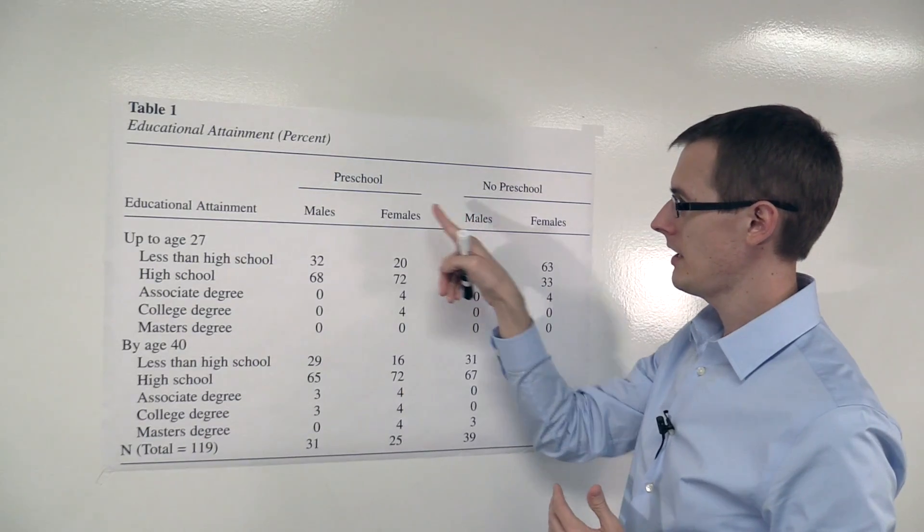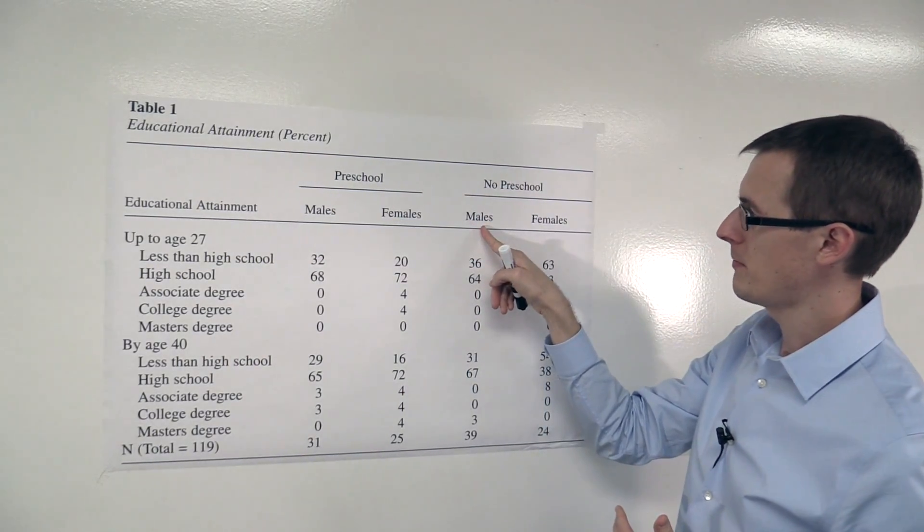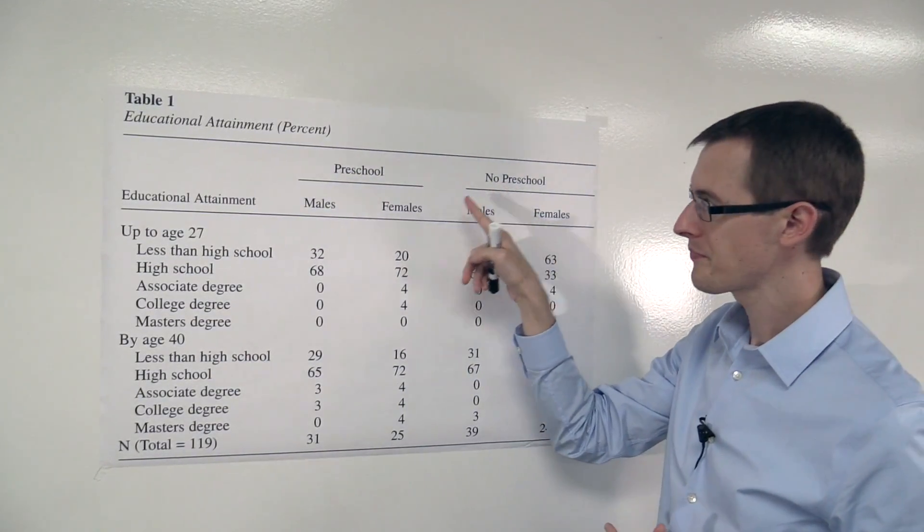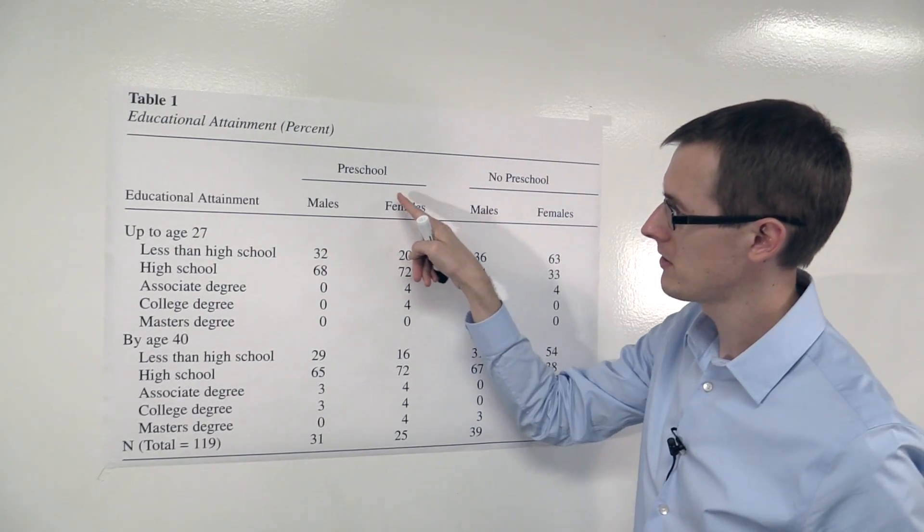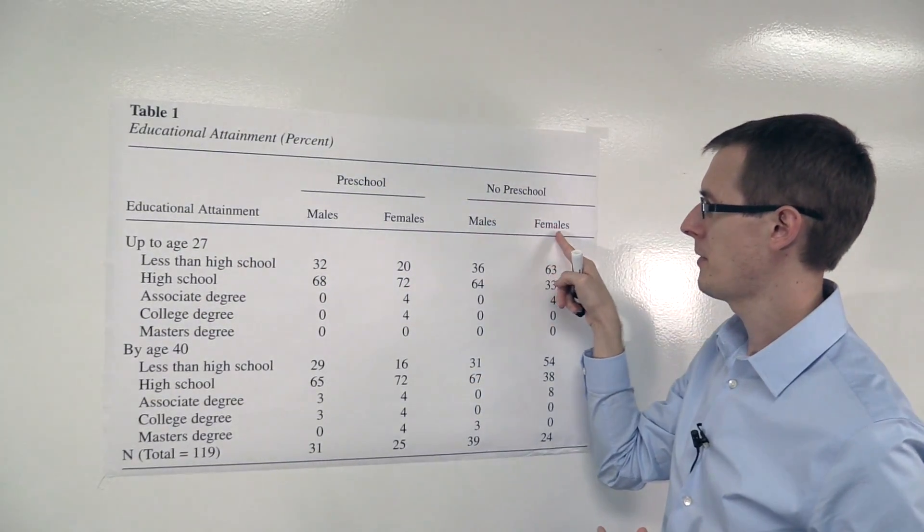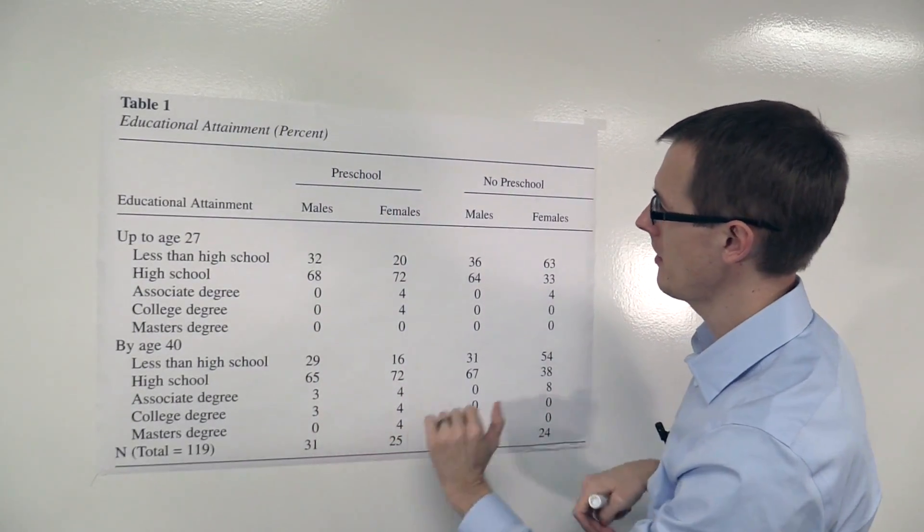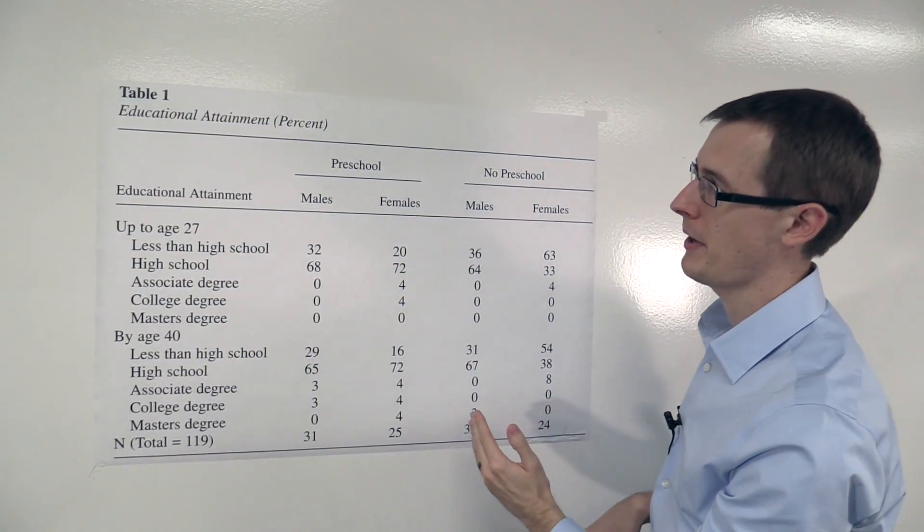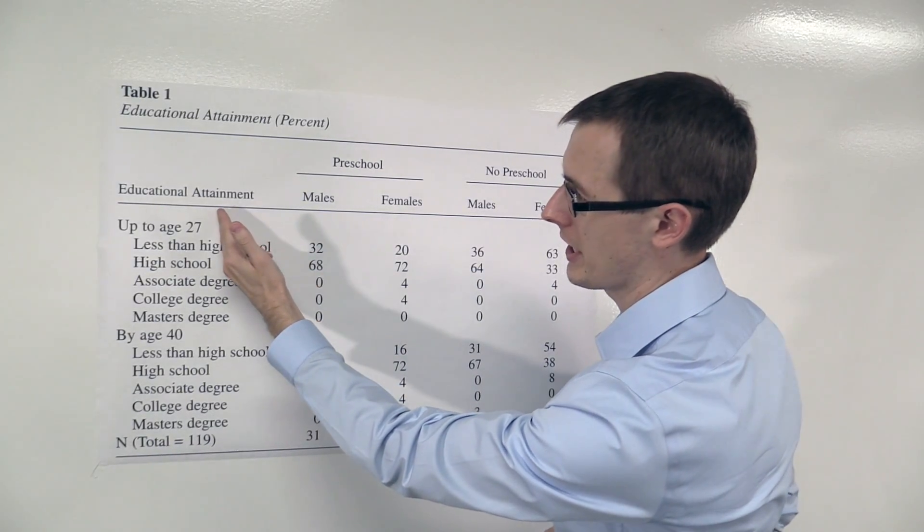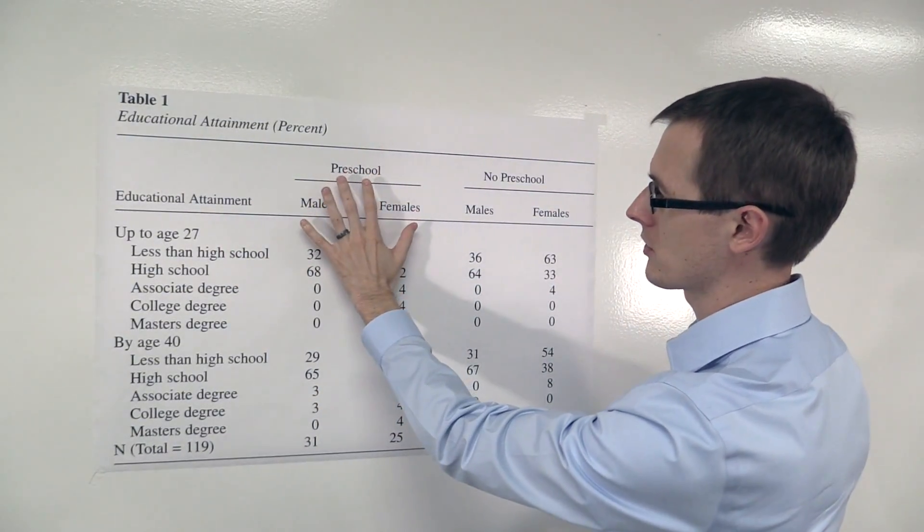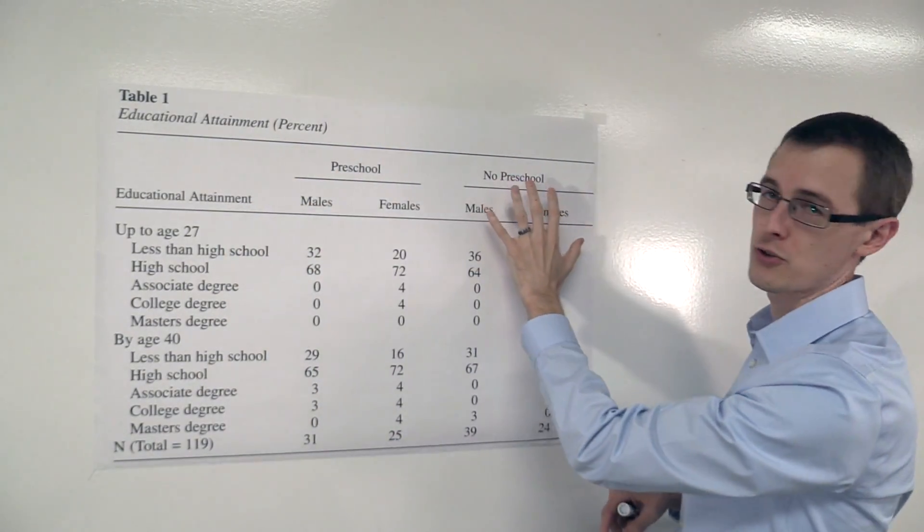So here we're going to list males in preschool versus males who didn't get preschool, and then we're going to have females who got preschool and females who didn't get preschool. So this is the treatment group here, this is the control group. And what we're going to do is compare the outcomes, educational attainment, across the treatment group with the control group.